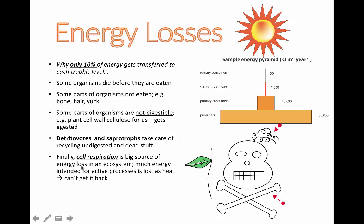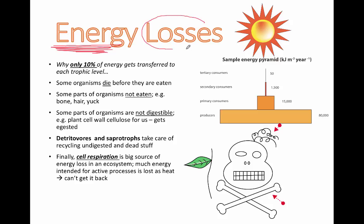Finally, cell respiration is a big source of energy loss — this is the one you probably already knew. Much of the energy intended for active processes is lost as heat, and we cannot get that back. This is an important point: energy in an ecosystem definitely gets lost.